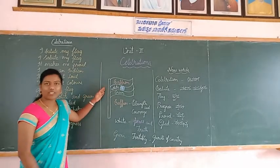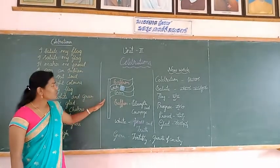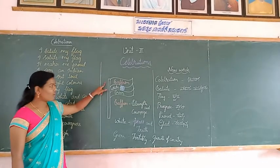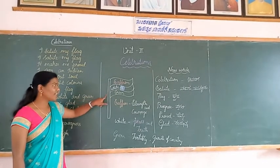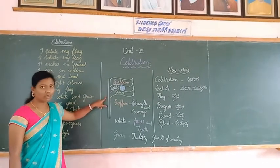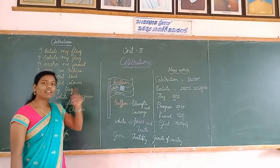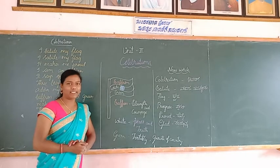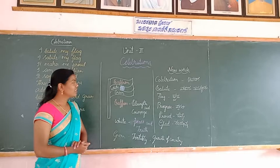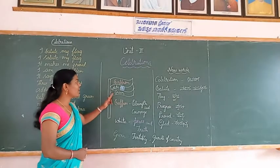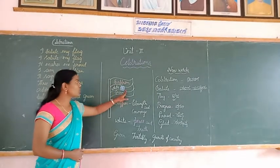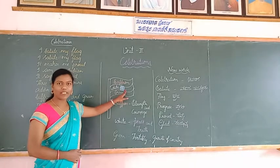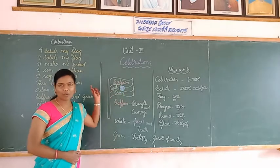I draw a picture of the national flag. Here on the top is saffron, in the middle white, and at the bottom green. Dear students, our national flag has three colors. The Ashoka Chakra is in blue and is placed in the middle of the white band.